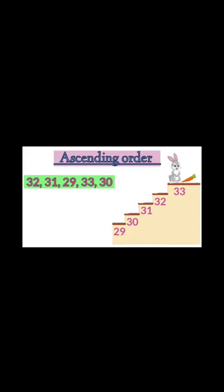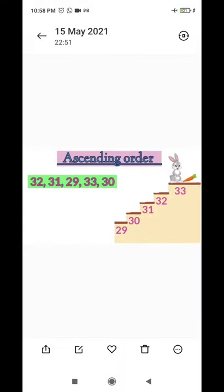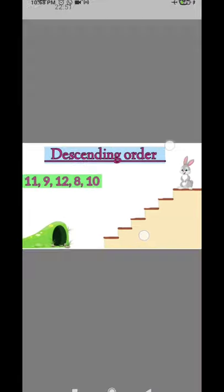And then also we can use the same way—we can use that thread to make this rabbit move in increasing order or it should be decreasing order. If we want to show it in ascending order, the rabbit will go from number 29 to 33 in the upward direction. And if I want to show in the downward direction, then I need to show in the descending order this way.